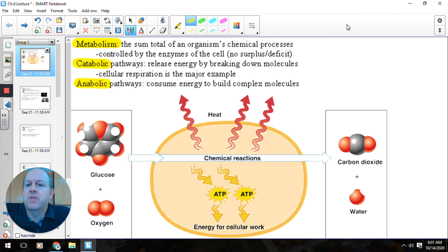Catabolic pathways are when we have complex molecules that are going to break down and release energy. So in cellular respiration, we have complex sugars, and so they are going to break apart and release energy as they do so.